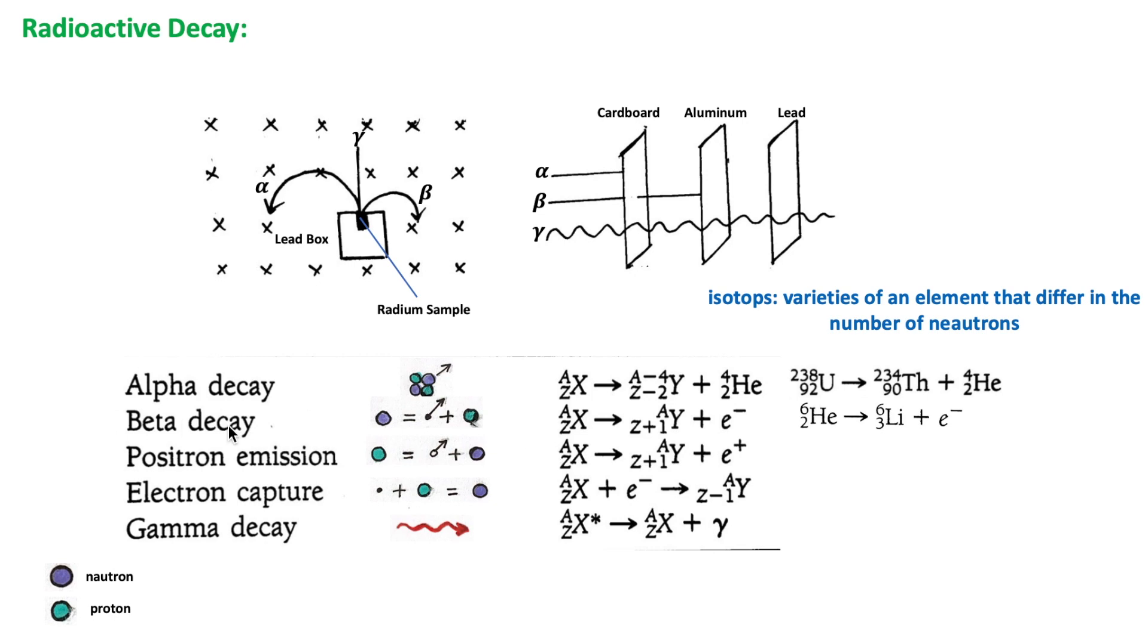An example of beta decay is this decay. This is a helium isotope and it is unstable because the most stable helium nucleus is He-4-2. This isotope has four neutrons, but the stable one has only two. The reason of instability in this case is the excess of neutrons.